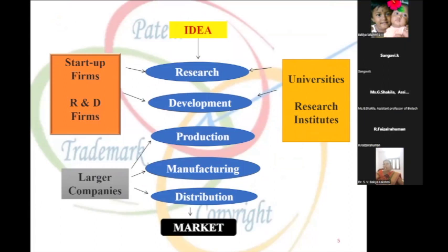Ideas and research and development happen in two ways. One is from a university or research institute, and the other from R&D companies or any startup framework. Larger companies also have production and manufacturing units, but they need specific novelty ideas. If the product is differentiated from other products, it will go to the market and be a success. Ideas can be generated from universities, research institutes, startup companies, or R&D companies through the R&D process.